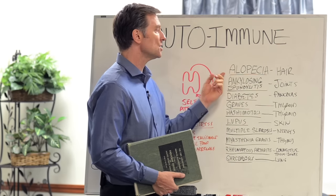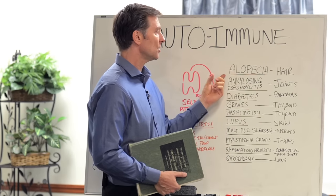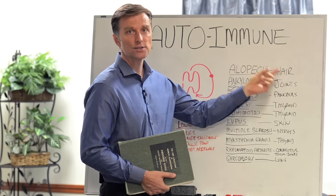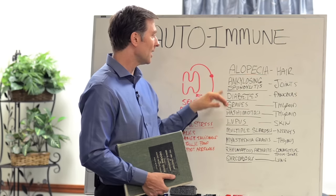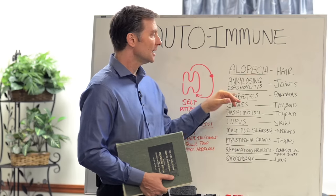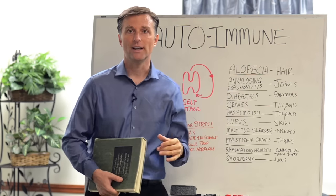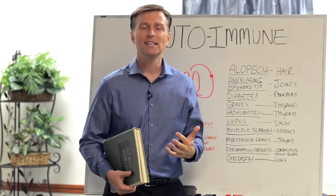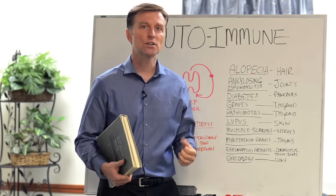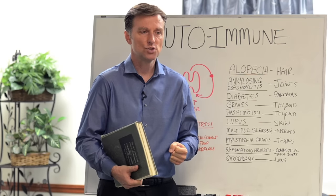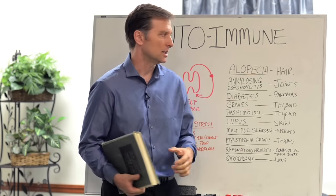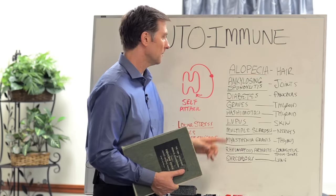So alopecia, for example, that's autoimmune of your own hair — you have spots of hair falling out. Ankylosing spondylitis, that's of the joints. It's a condition where over time a person literally turns into stone — every single joint becomes frozen. It's terrible.